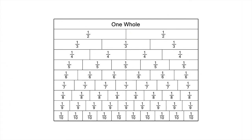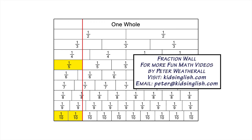Let's summarise what we've found. 1 fifth and 2 tenths are equivalent fractions. One way to check for equivalent fractions is to see which fractions line up with 1 fifth when you draw a vertical line from the end of 1 fifth down the fraction wall. The end of 2 tenths lines up nicely with 1 fifth.